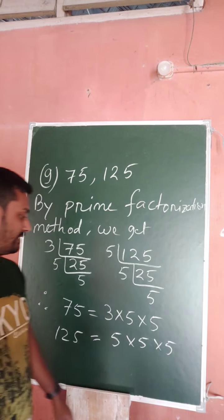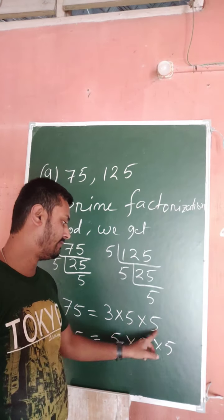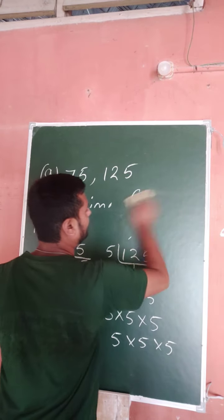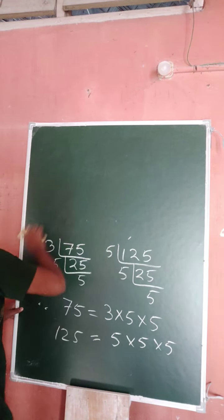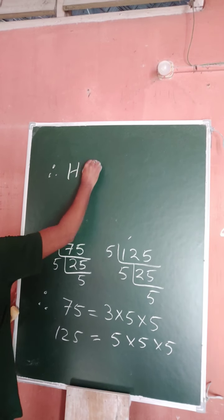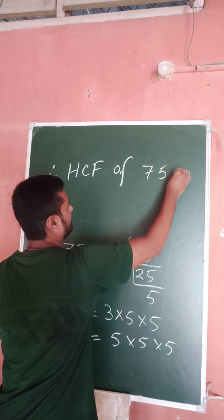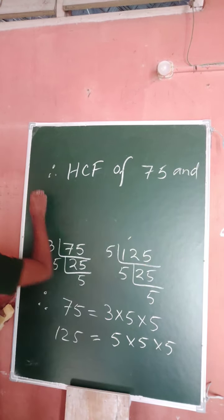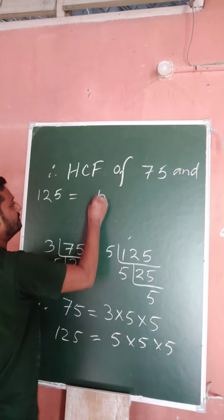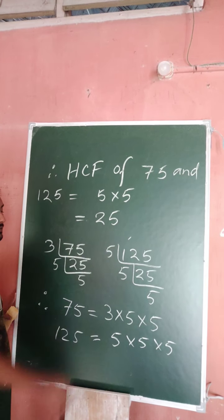The common factors are: this five and this five — that means 5 × 5 = 25 will be the HCF. Therefore, HCF of 75 and 125 equals 5 × 5, that means 25.